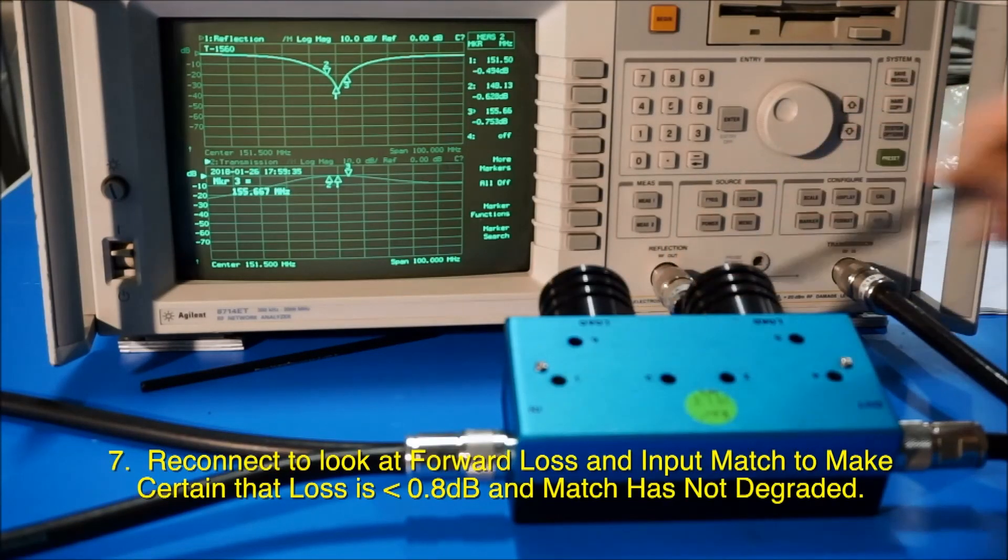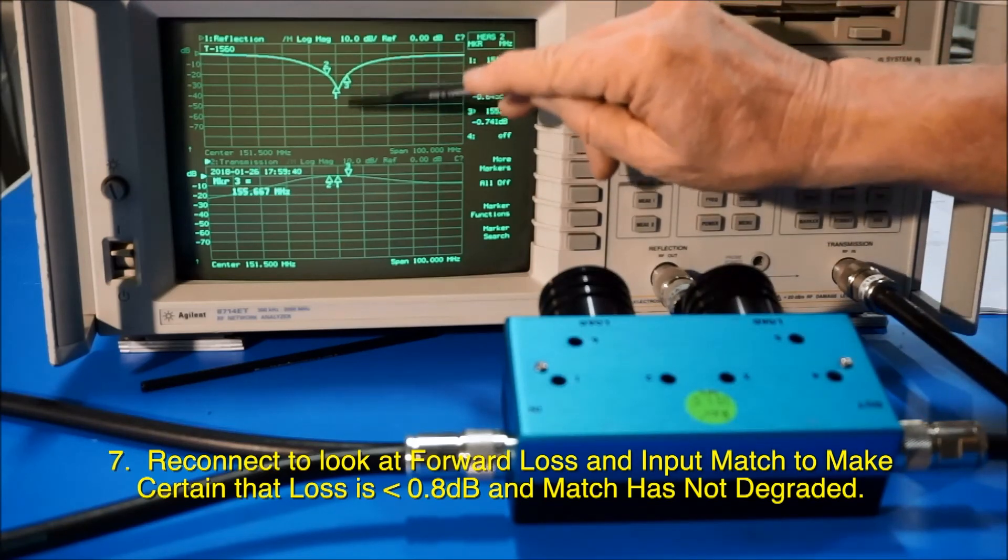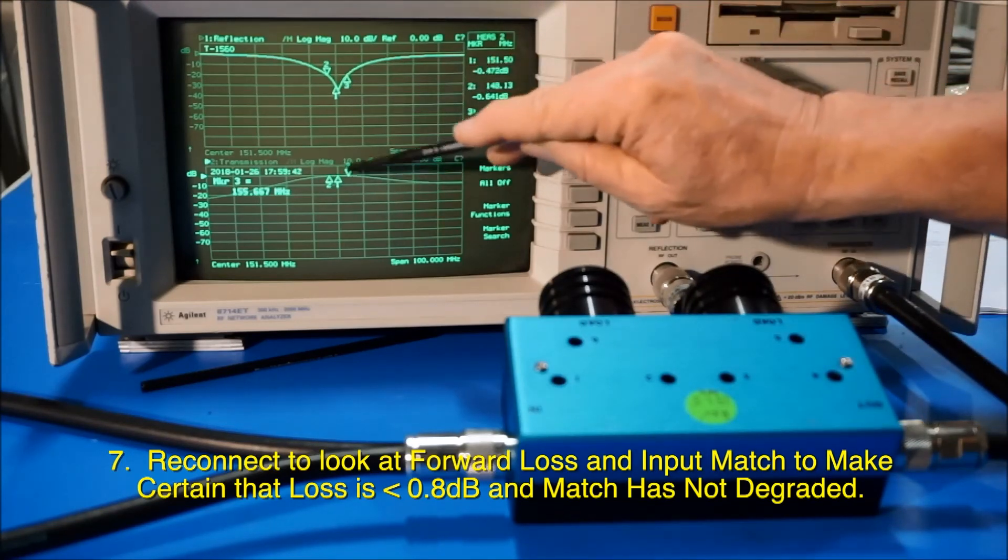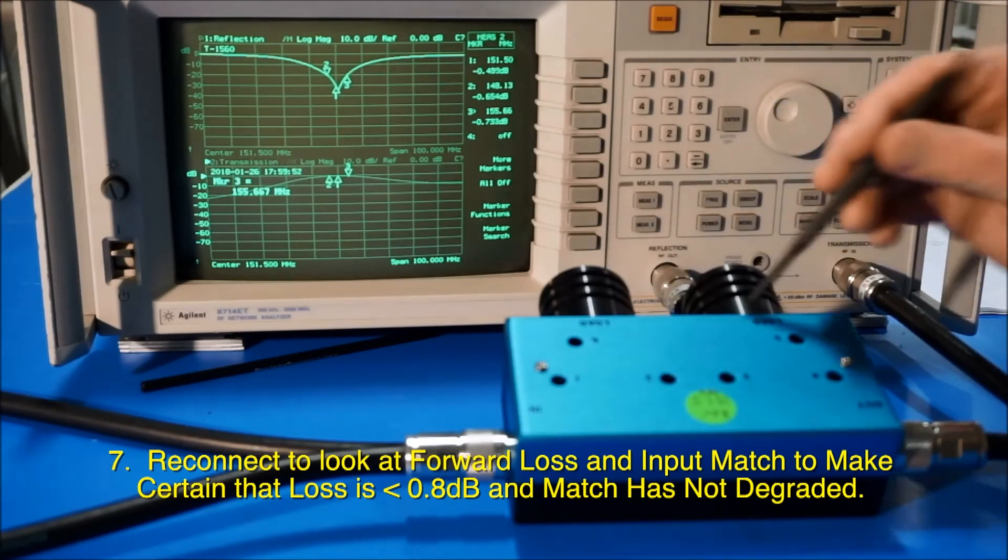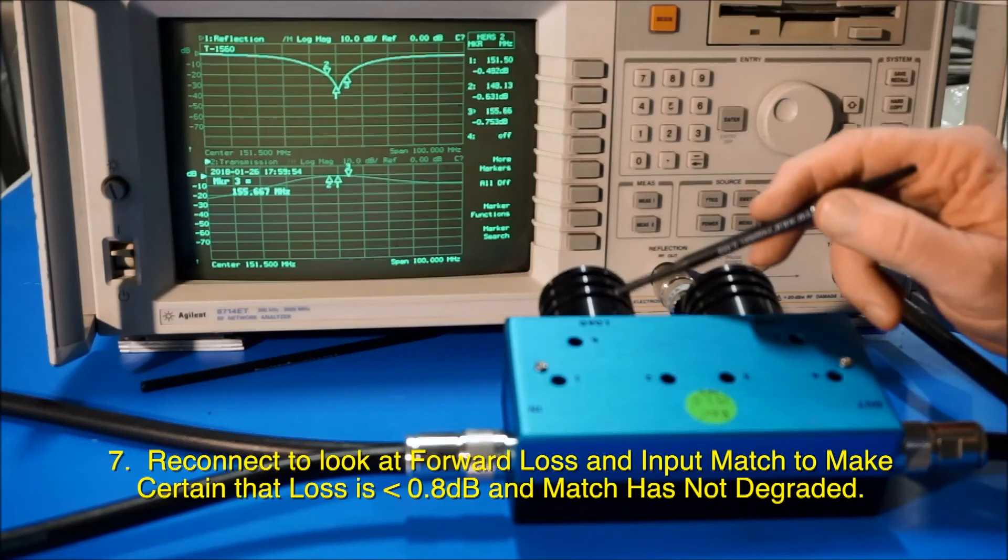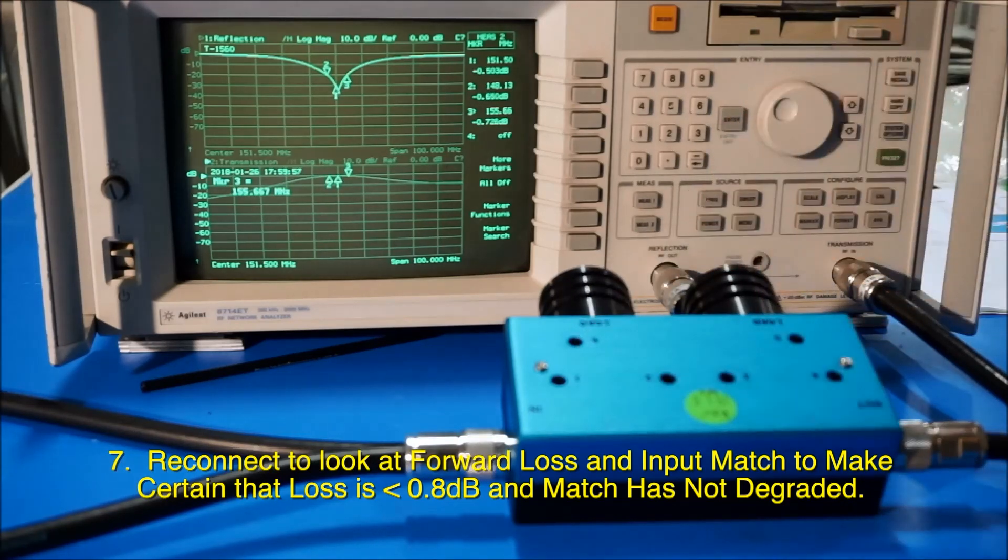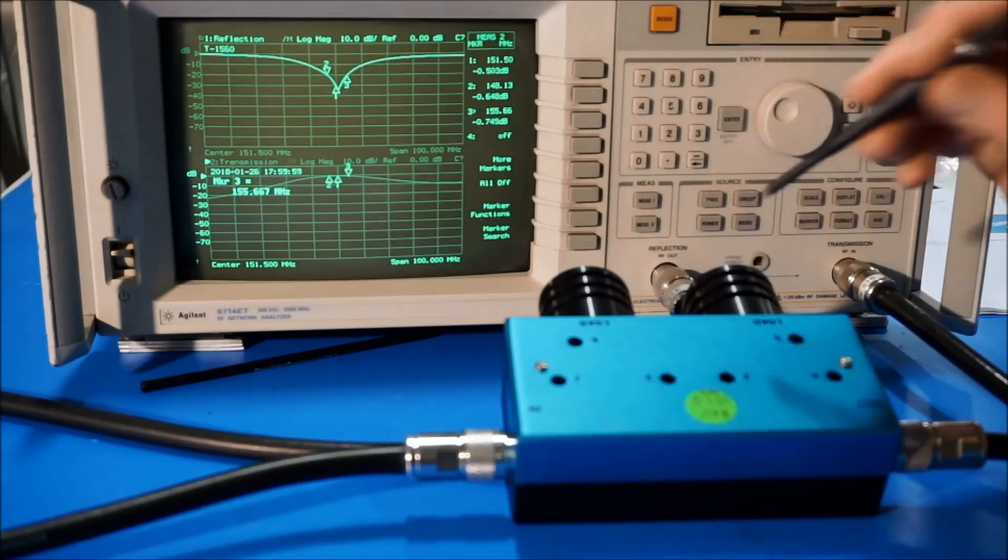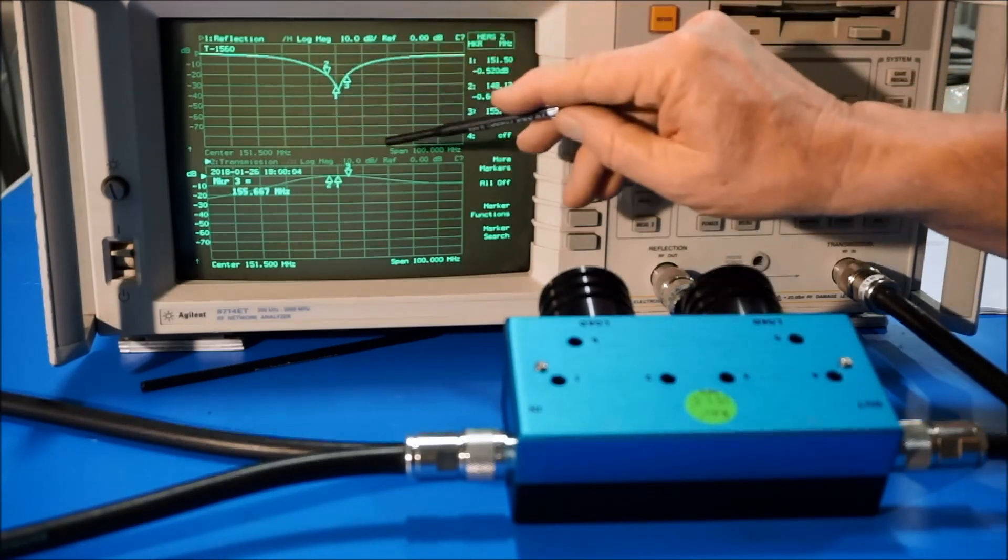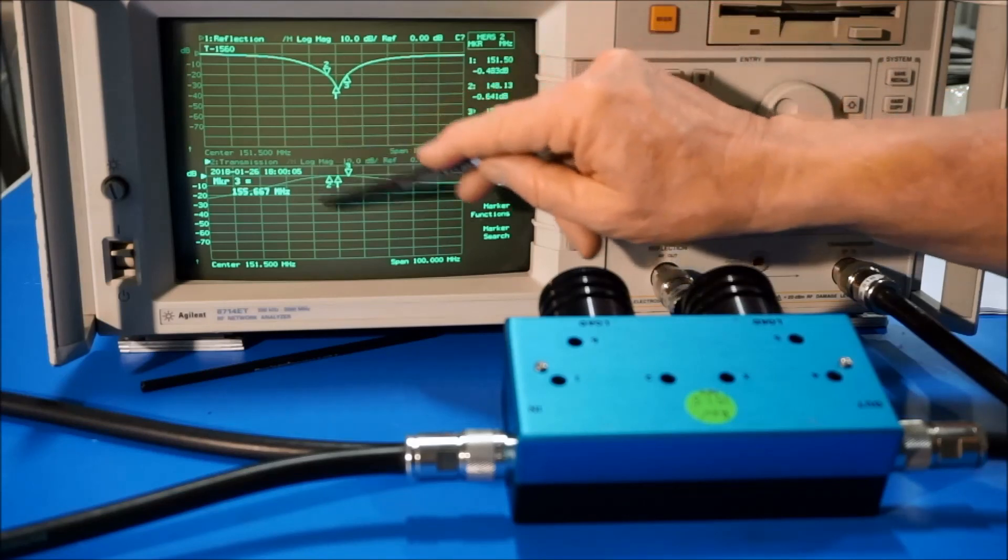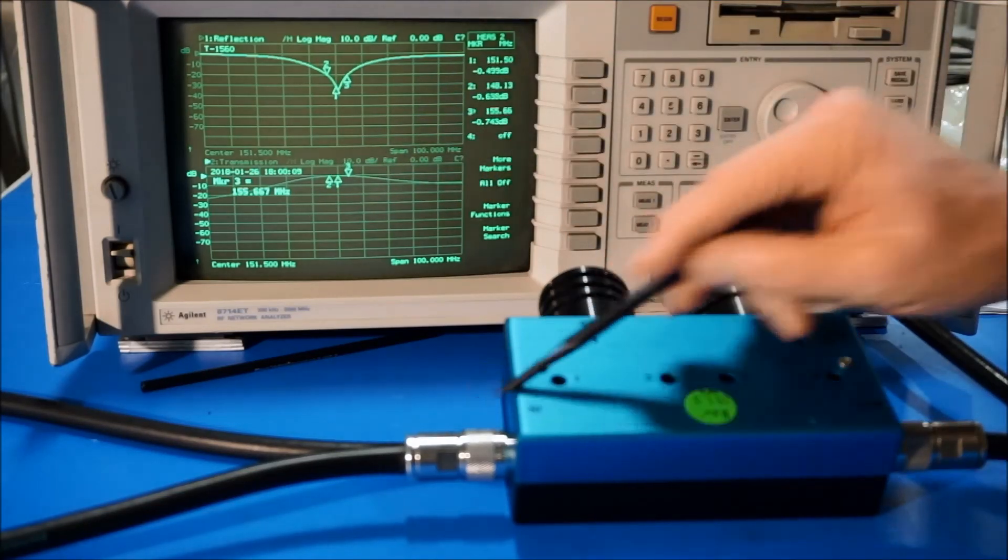I've swapped the ports back to the in and out here to see what our match is this way. As you see, our match is still good. Our loss is still good. So this is now tuned and the notch is in the exact right place. Just a slight adjustment. Once you get it into the area where you need to be, the slight adjustment of these two will make the isolation maximum. But you have to be careful because you have to make sure that you don't mess up your input match or the output match, or the loss that's going through the thing in the correct direction.